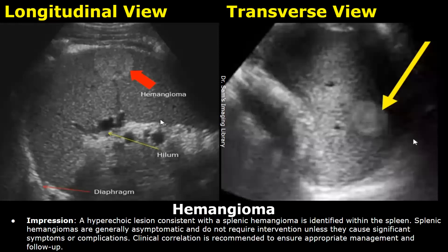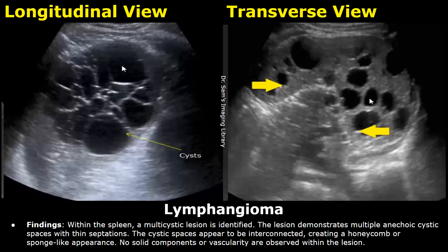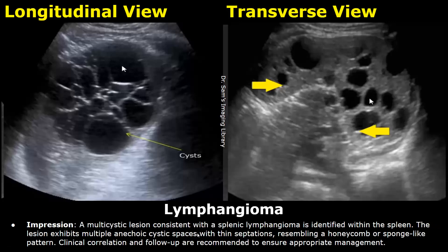This is a report for lymphangioma. In the findings, a multicystic lesion is identified. It has multiple anechoic cysts with thin septations. The cystic spaces appear to be interconnected, creating a honeycomb or sponge-like appearance. In the impression, you can mention the lymphangioma and also mention multiple anechoic cystic spaces.